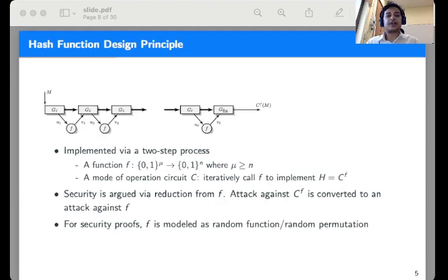The hash functions are designed in two steps. First, one chooses a suitable function f which is a μ-bit to n-bit function with μ greater than or equal to n. The hash function is implemented via a domain extension algorithm or a mode of operation algorithm which on input m iteratively queries the function f as a subroutine with suitable inputs and computes the hash value based on the responses. In the figure, the blocks g_i are the ones which decide the output or decide the input to query the function f.